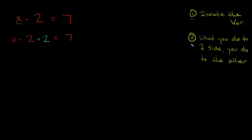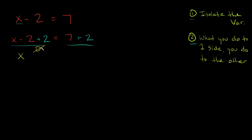According to our second step, what you do to one side you have to do to the other. So if I'm going to add 2 to this side of the equation, I also have to add 2 to this side to keep it balanced. Now I can simplify: I have x, and then minus 2 plus 2 — negative 2 plus 2 is just zero, so that cancels out. Then we have the equal sign, and 7 plus 2. What's 7 plus 2? That's equal to 9. So the solution is x is equal to 9.